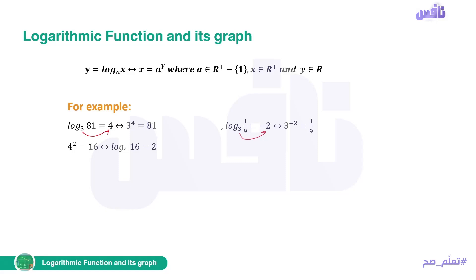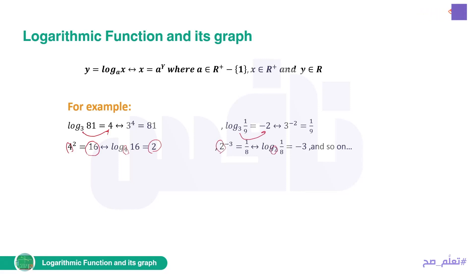Now the reverse: 4 squared equals 16 — how do we write this as a log? The base, which is 4, becomes the base of the log. So it becomes log base 4 of 16 equals 2, the power becomes the result. Similarly, 2 to the power of negative 3 equals 1/8 converts to log base 2 of (1/8) equals negative 3: the result goes inside the log and the power becomes the value on the other side.